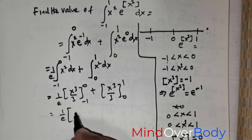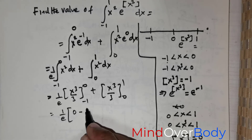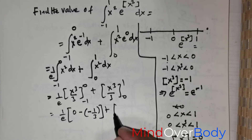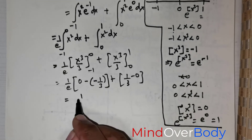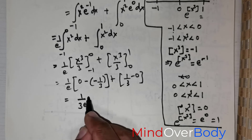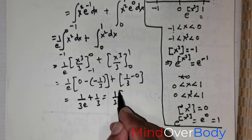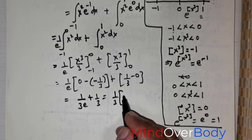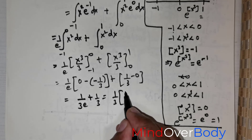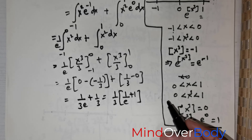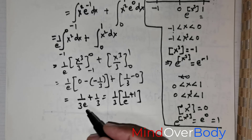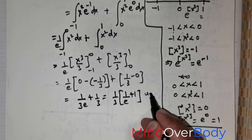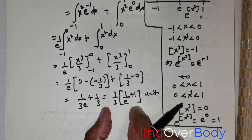Applying the limits: for the first integral, the upper limit gives 0 and the lower limit gives negative 1 over 3, contributing a factor of 1 over 3 times 1 over e. For the second integral, the upper limit gives 1 over 3 and the lower limit gives 0. Combining, we get 1 over 3e plus 1 over 3, which can be written as (1 over 3) times (1 over e + 1).